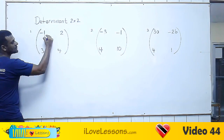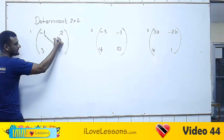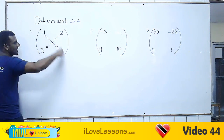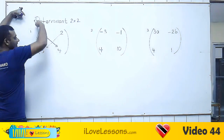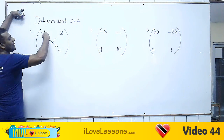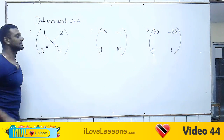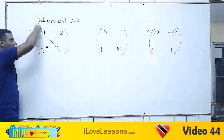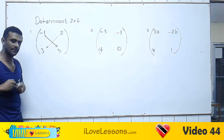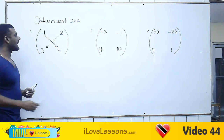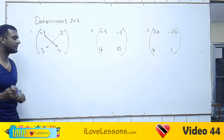Try to imagine two diagonals — one going this way and one going this way, like a little X. The one going from the upper left to the lower right is called your leading diagonal, or in simple terms, the more important one. You're going to multiply the more important one — the leading diagonal — first.